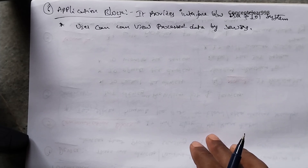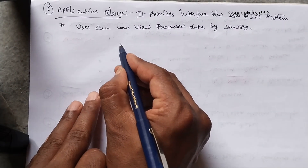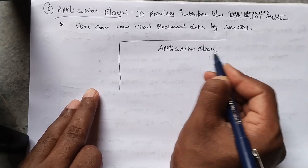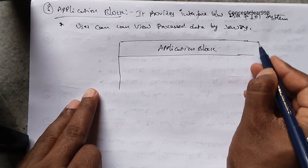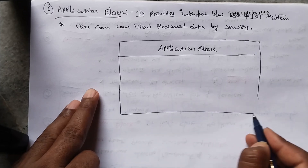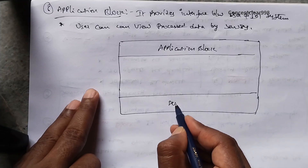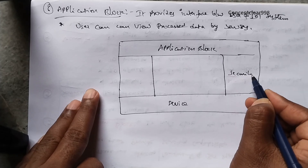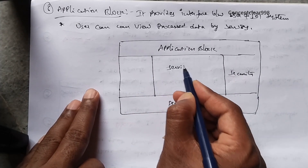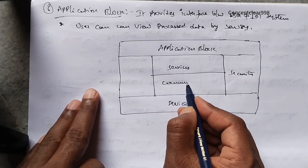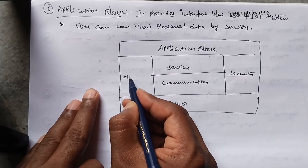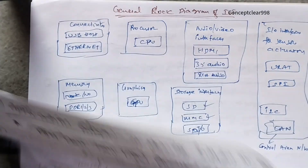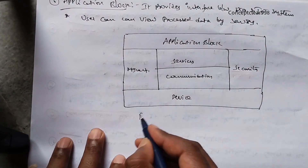Here we have a block diagram showing all six blocks. The first is the Application block and the last is the Device block. In between, there are the Security block, Services block, Communication block, and Management block. This covers the functional blocks of IoT.